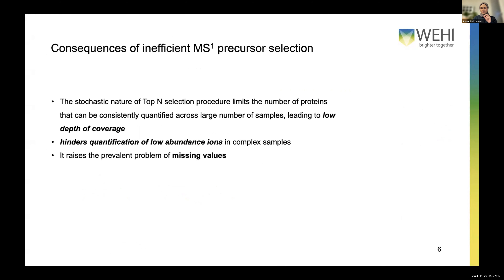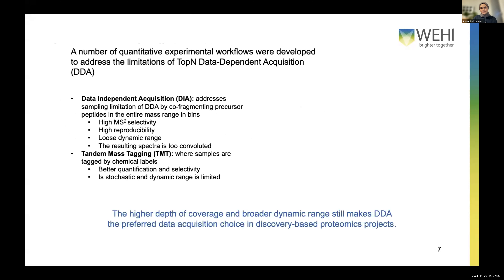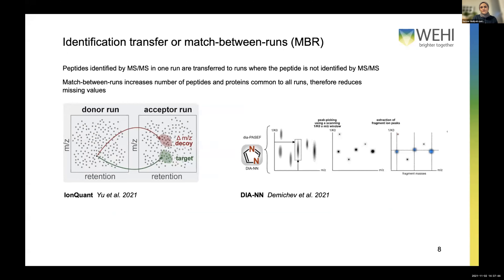Because we can't consistently quantify all features — peptides or proteins — across samples, we have lots of missing values. There are alternative data acquisition workflows that address limitations of DDA, but in practice the broader dynamic range of DDA makes it more appropriate for discovery-based proteomics. One crucial step at quantification is identification transfer — or match between runs — where a peptide detected in a donor run is transferred to a run where it's missing, if a peak or signal exists within a reasonable neighborhood of that donor peptide.